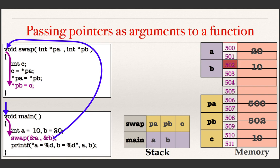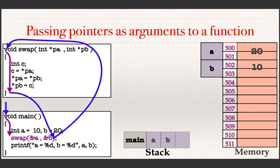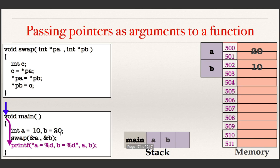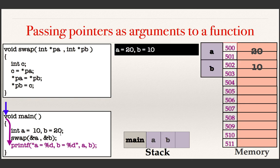The swap function finishes executing and returns to main. The instance of swap is deleted and not accessible to main. Execution comes to the last statement: print a and b. Through the stack it goes and finds the values of a and b in main's memory. What is the value of a? 20. b? 10. It prints 20 and 10 — that is what we wanted. The swap effect is now visible in main.